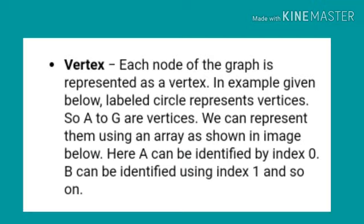First is vertex. Each node of the graph is represented as a vertex. In the example given below, labeled circles represent vertices. So, A to G are vertices. We can represent them using an array as shown in the image below. Here, A can be identified by index 0, B can be identified using index 1, and so on.